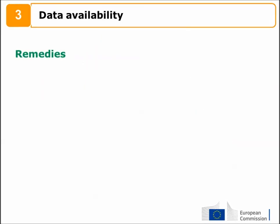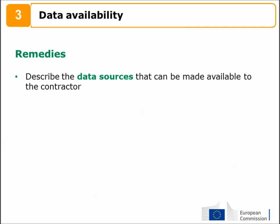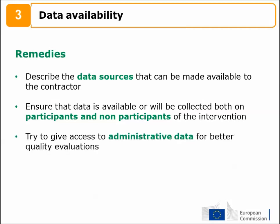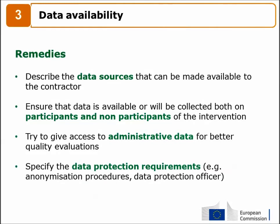For these reasons, describe the data sources that can be made available to the contractor. To evaluate the training program, you will need to collect data for young adults who did not participate in the training sessions. Try to give access to administrative data for better quality evaluations, and specify the data protection requirements — for example, anonymization procedures — and choose a data protection officer in charge of ensuring respect of privacy requirements.